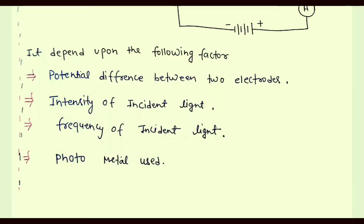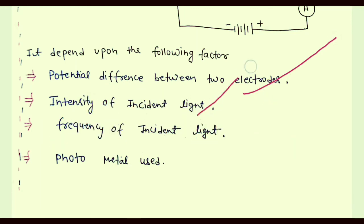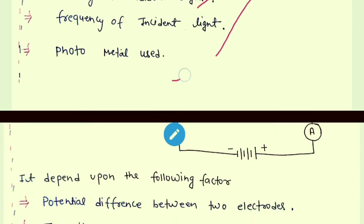Let's see on which all factors photocurrent depends. Photocurrent depends upon the potential difference between two electrodes, intensity of incident light, frequency of incident light, and it also depends upon the type of metal used as the surface.